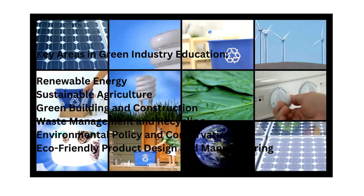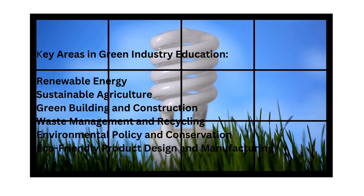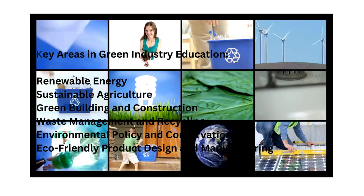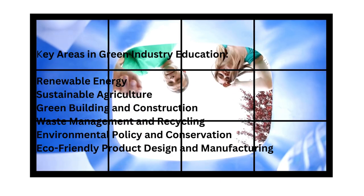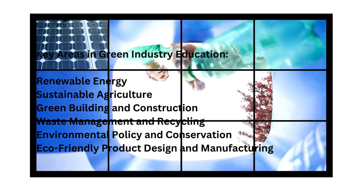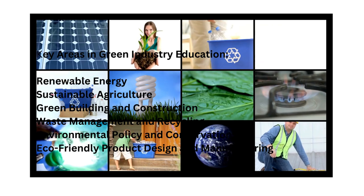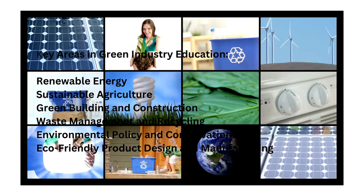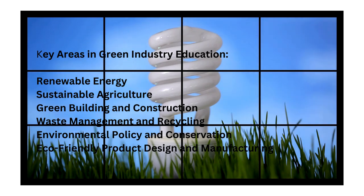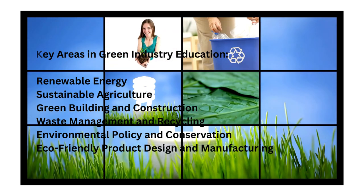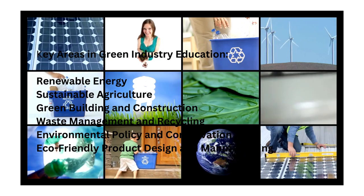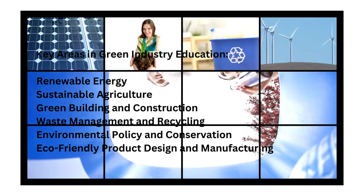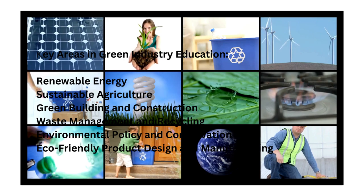Key areas in green industry education include: renewable energy — its sources, production, distribution, and safety issues; sustainable agriculture, meeting society's present food and textile needs without causing environmental changes; green building and construction, developing homes with low energy consumption and reduced carbon emissions; waste management and recycling, increasing the product life cycle and reusing and recovering materials wherever possible; and environmental policy and conservation, preventing or reducing harmful effects of human activities on ecosystems.